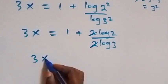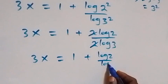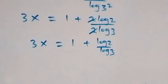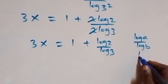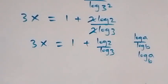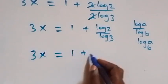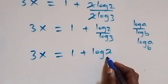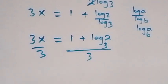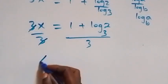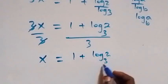This becomes 3x equals 1 plus log 2 over log 3. We apply the change of base formula: log a over log b is the same as log a to base b. So what we have becomes 3x equals 1 plus log 2 to base 3. Since we are finding x, we divide both sides by 3, and the 3's cancel each other.